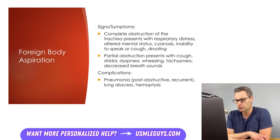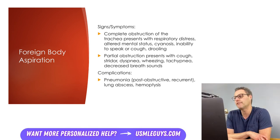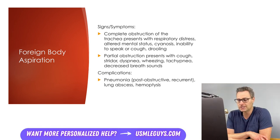Complete obstruction of the trachea presents with respiratory distress, altered mental status, cyanosis, and inability to speak or cough — and if not rapidly cleared, can result in death due to asphyxiation. While adults typically aspirate foreign bodies in the right main stem bronchus, children more frequently have obstruction in either the right or left main stem, because the bronchial tree is not yet fully developed. If the aspiration event isn't witnessed or symptoms are temporary, complications can develop. The most common complication is obstructive pneumonia, which initially improves with antibiotics but then reoccurs.